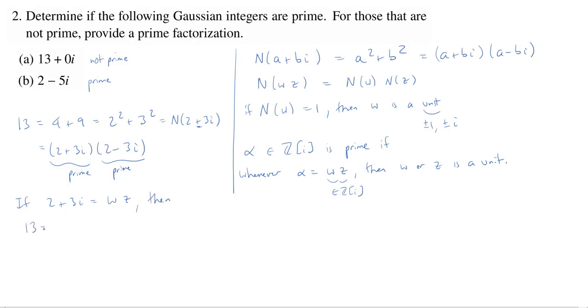Then we know that 13 equals the norm of 2 plus 3i equals the norm of wz equals the norm of w times the norm of z. So here we're using this theorem on the norm, as Dedekind called it. But 13 is an integer, N(w) and N(z) are all integers.